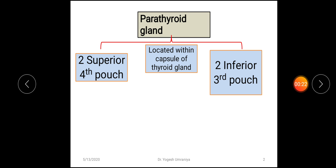In total, four glands are there — two superior and two inferior parathyroid glands. The superior parathyroid glands are developing from the fourth pharyngeal pouch, and the inferior parathyroid glands are developing from the third pharyngeal pouch.